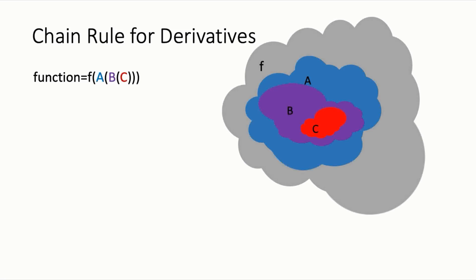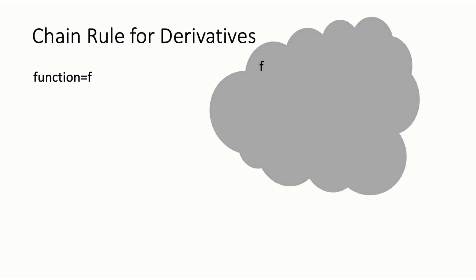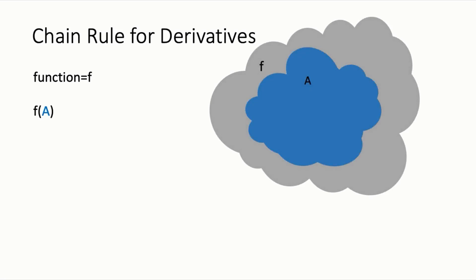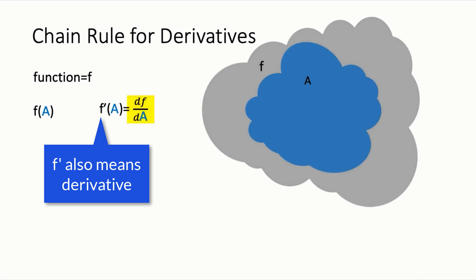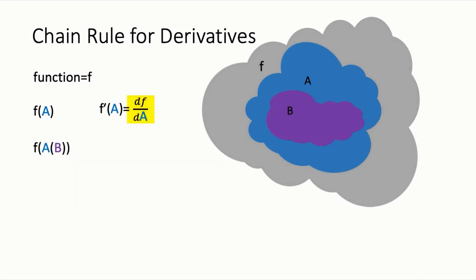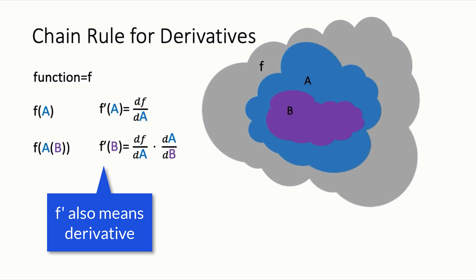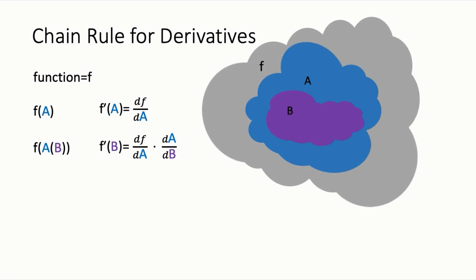Let's see how this works. On the right is a cloud labeled f containing a cloud labeled a, showing f as a function of a. Visually, changes in a cause changes in f, which is the derivative of f with respect to a. Now imagine a is a function of b. If we want the derivative of f with respect to b, we can use the chain rule. When reading the chain rule, it helps to read from right to left. We'll take the derivative of a with respect to b and multiply this by the derivative of f with respect to a.